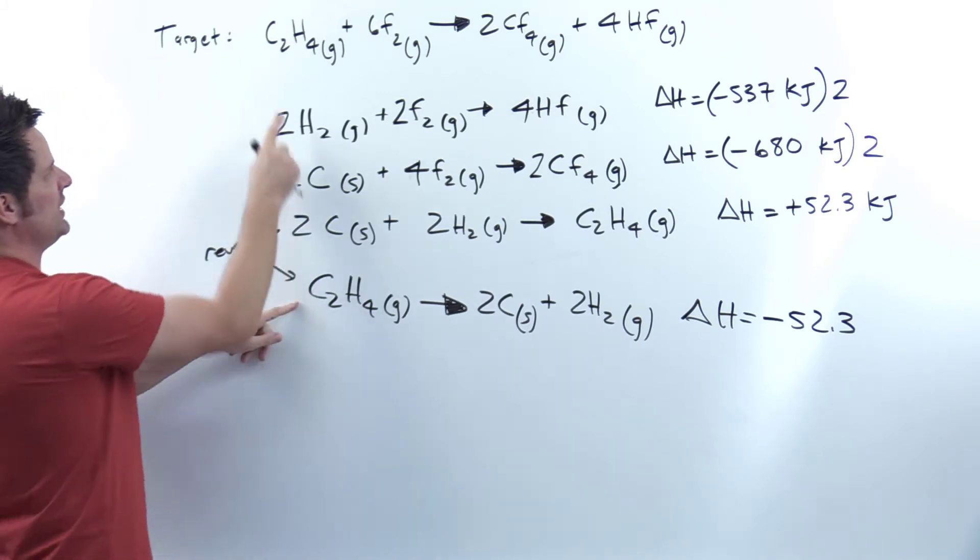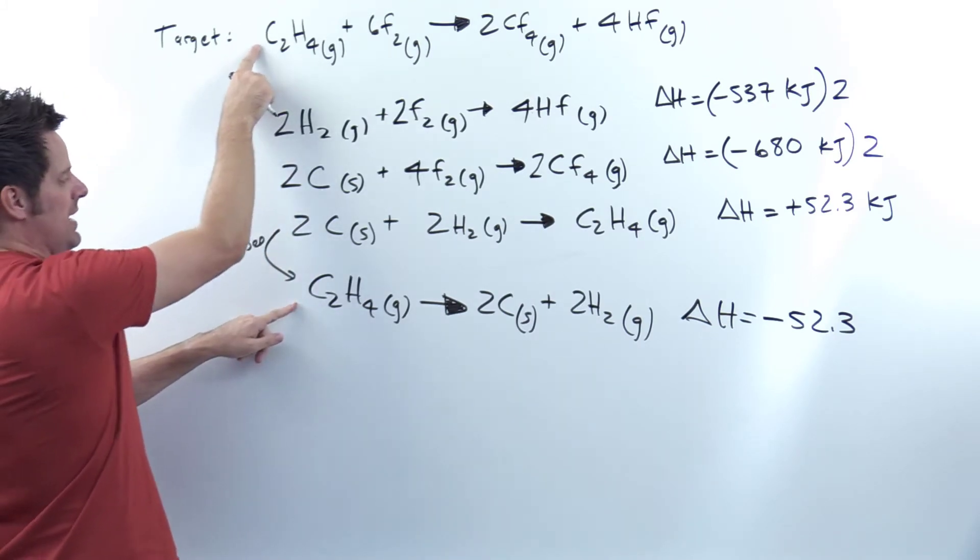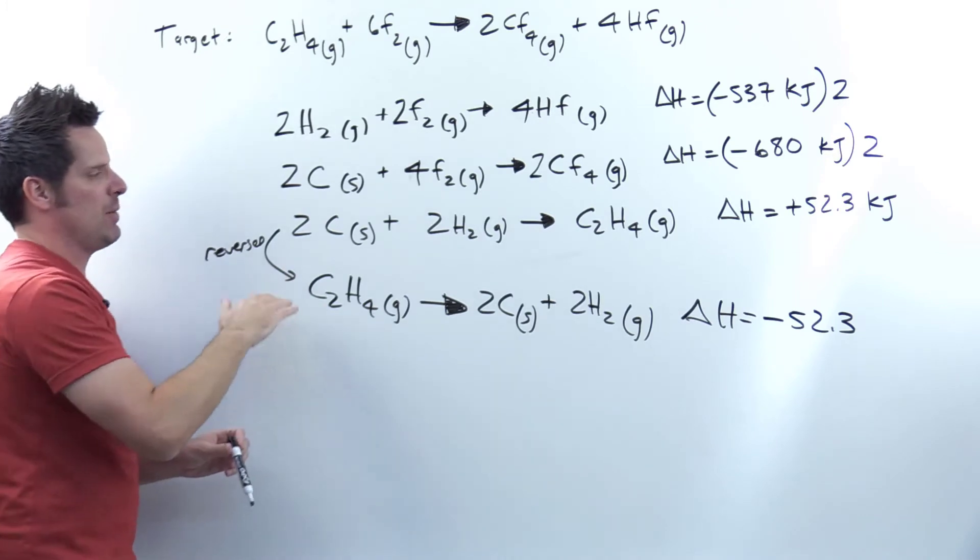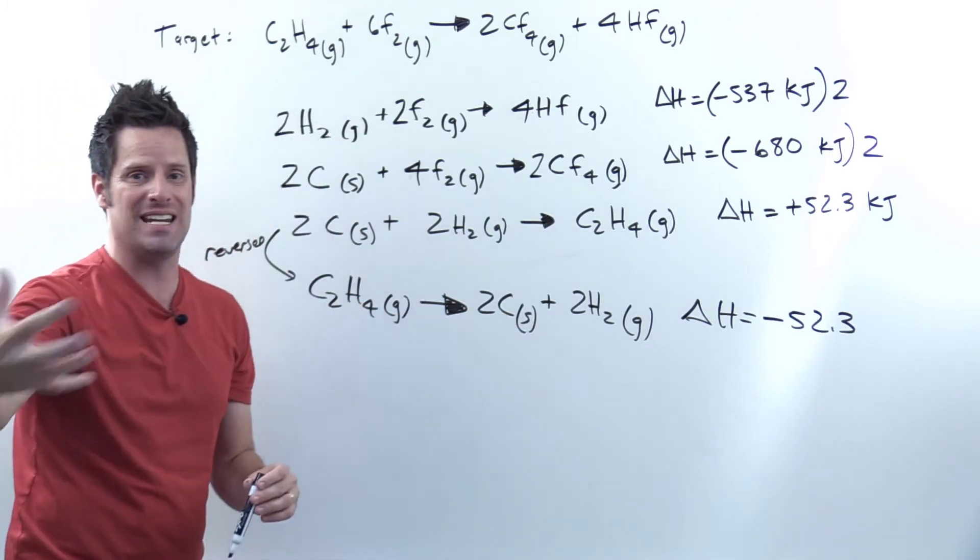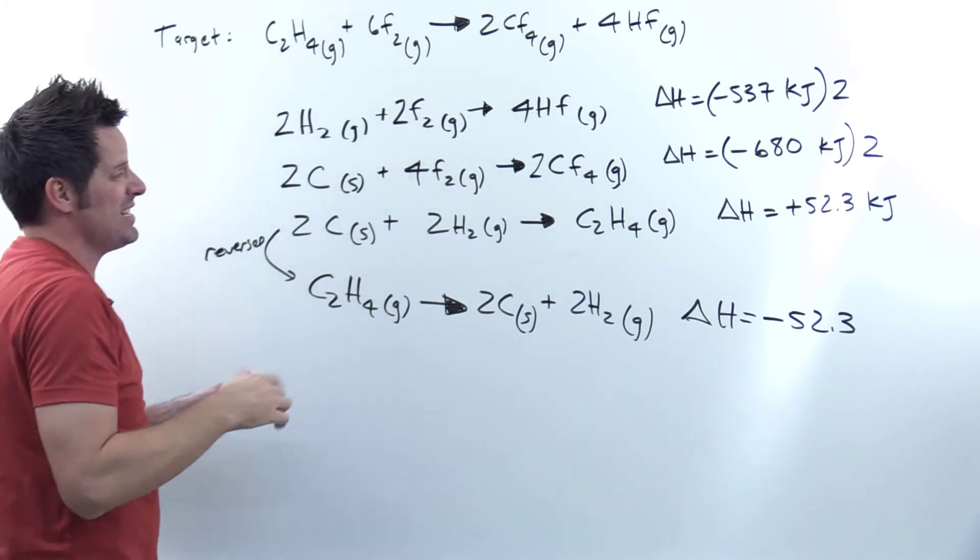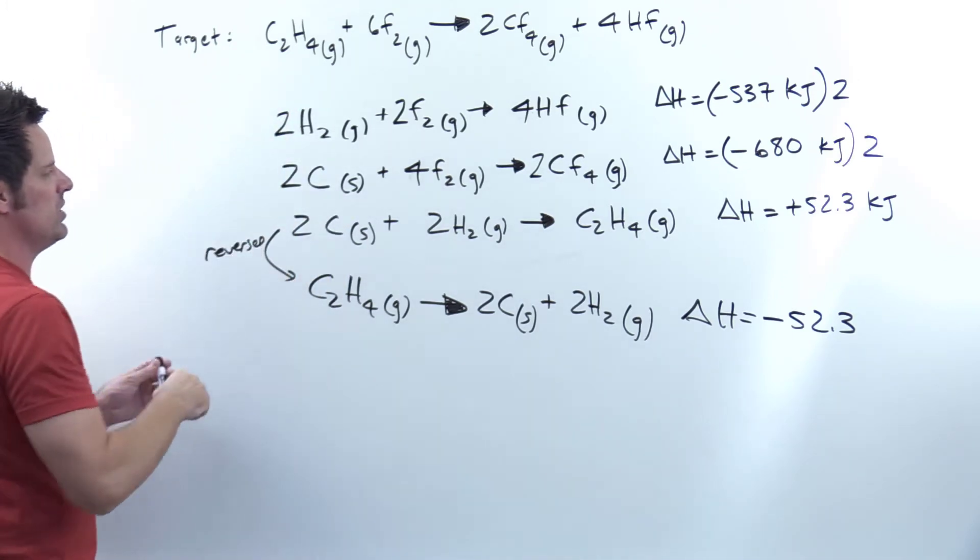Conveniently, the coefficient of my C2H4, my target is one, and it's also one here. Now if it were different, then I would also have to multiply all the coefficients here and the delta H by whatever term needed in order to arrive there. But I don't need to worry about that because they match one to one.